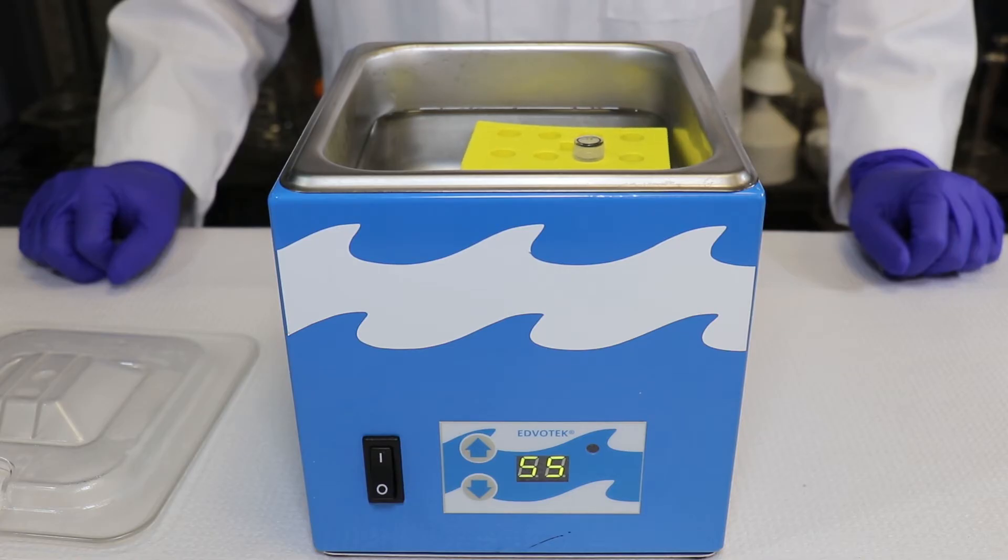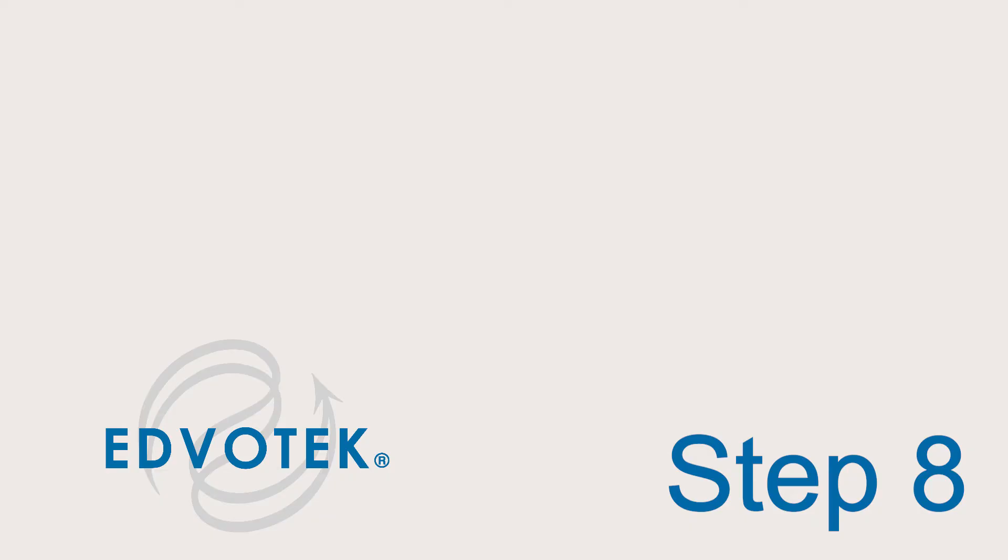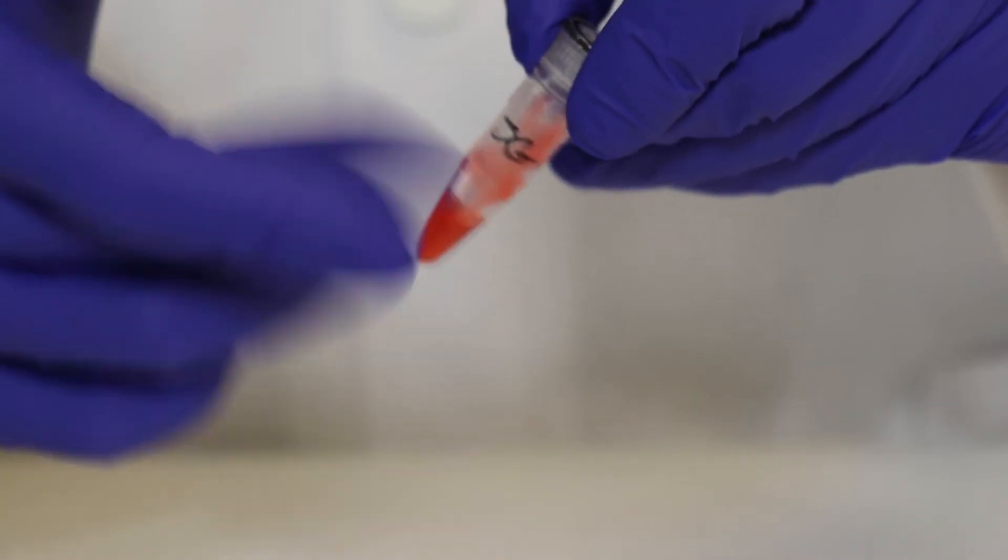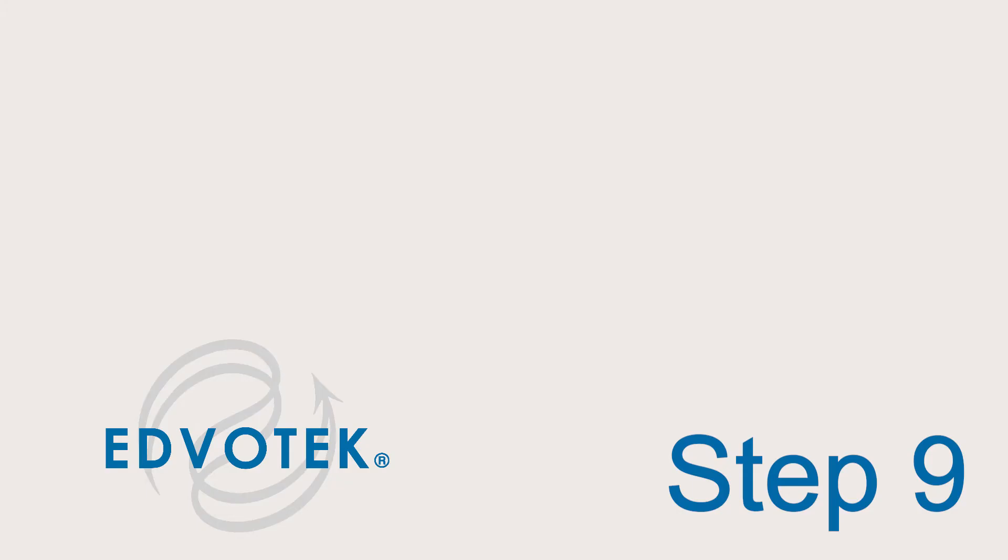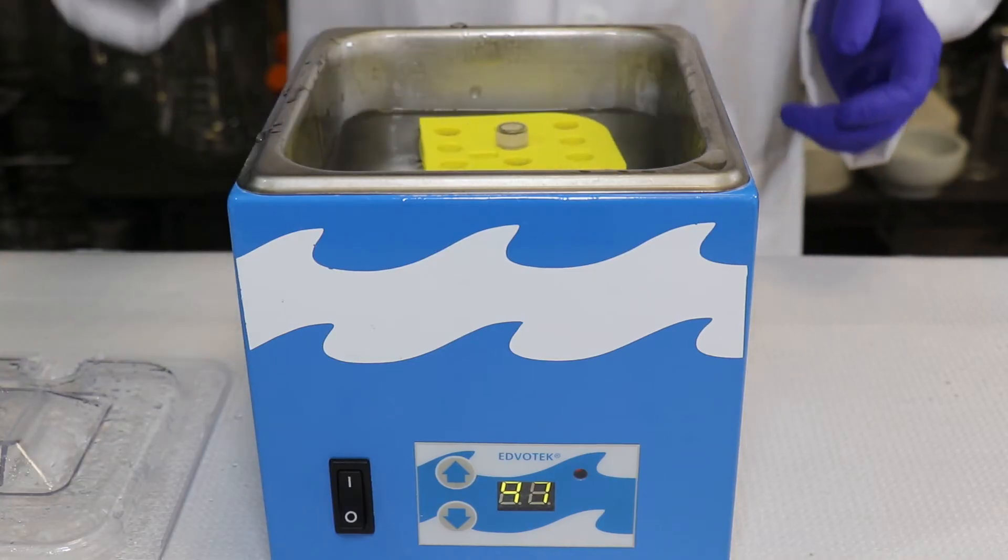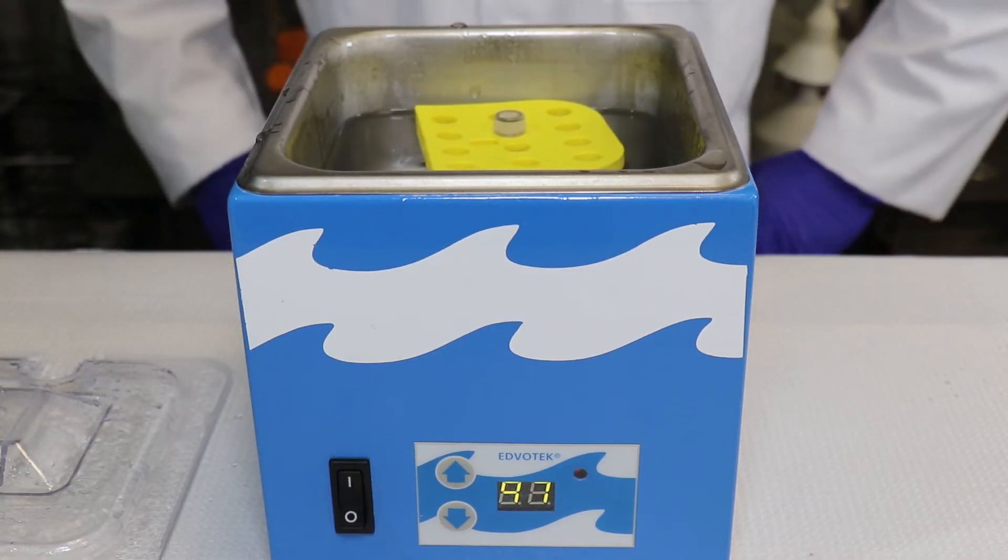Step 7: Cap the tube and place it into a 55 degrees Celsius water bath for 5 minutes. Step 8: Mix the sample by vortexing or by flicking the tube vigorously for 20 seconds.